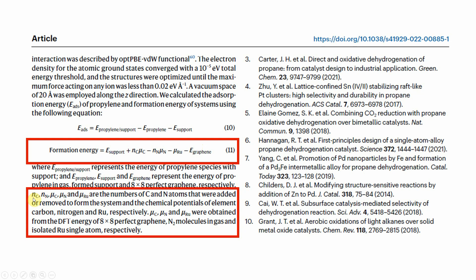As clearly mentioned in the paper, nc and nn are the numbers of carbon or nitrogen atoms that were added or removed to or from the system, and mu_c, mu_n, and mu_Ru are the chemical potentials of carbon, nitrogen, and ruthenium respectively. mu_c and mu_n and mu_Ru were obtained from the total DFT energy of an 8×8 graphene supercell.